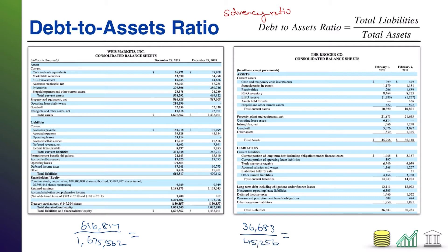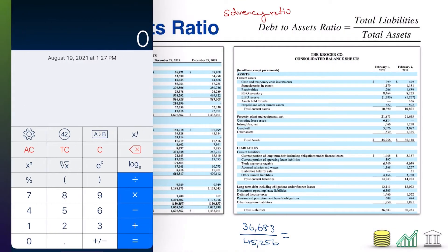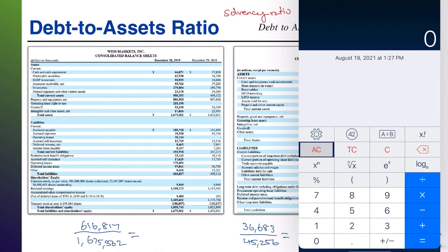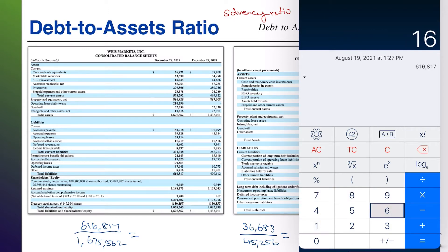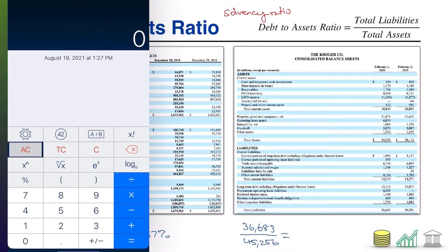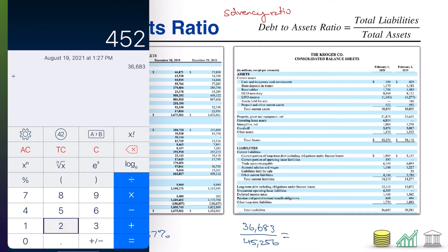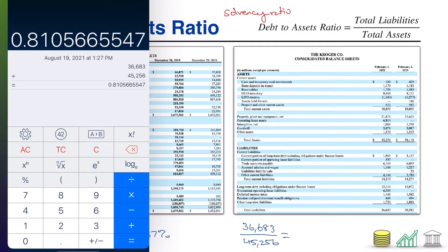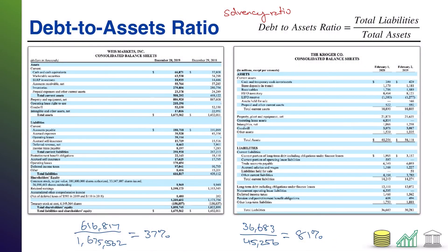Now I'm going to pull out my calculator and we'll check how these numbers work out. We'll start with Weiss: 616,817 over 1,675,562, and that is going to come out to approximately 37%. Then if we move over to Kroger, 36,683 divided by 45,256, that is going to work out to approximately 81%.